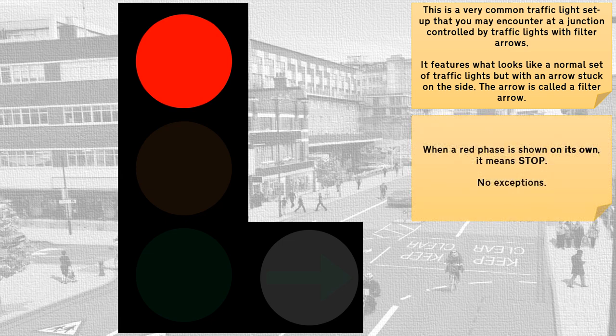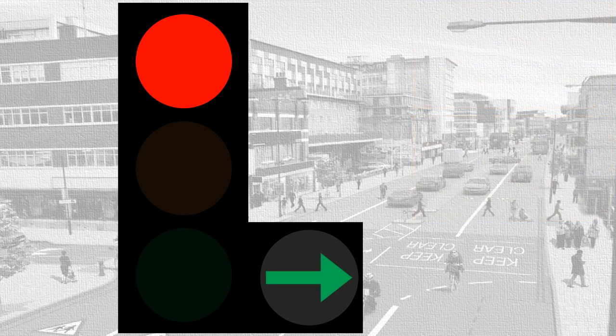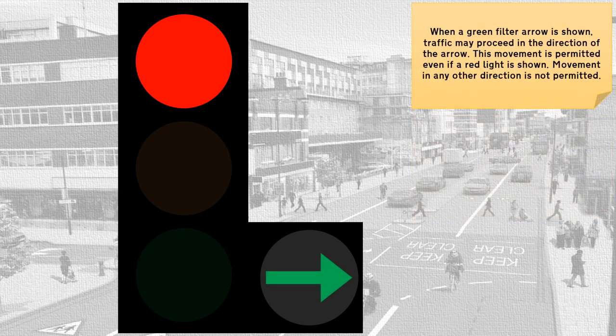When a red phase is shown on its own, it means stop — no exceptions. When a green filter arrow is shown, traffic may proceed in the direction of the arrow. This movement is permitted even if a red light is shown. Movement in any other direction is not permitted.